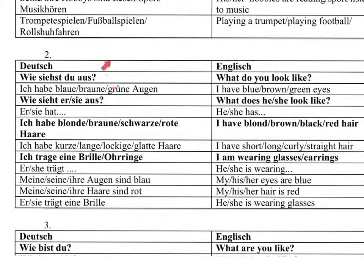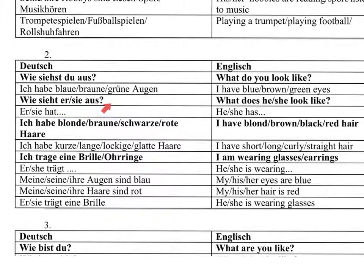Apart from that, everything else are answers here. The first question: Wie siehst du aus? Ich habe blaue, braune, grüne Augen. And then asking somebody else's appearance: Wie sieht er/sie aus? Er/sie hat blaue, braune, grüne Augen.